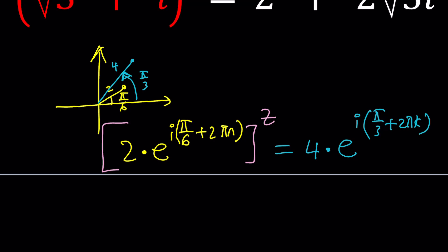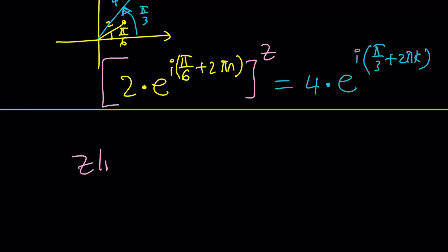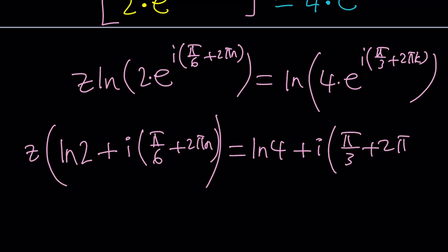Now you have z in the exponent. How do you bring it down? By using natural log. So when you do the natural log, you're going to get the following. z times ln 2 times e to the power i times pi over 6 plus 2 pi n equals ln 4 times e to the power i times pi over 3 plus 2 pi k. How do you ln a product? You split it into a sum, right?